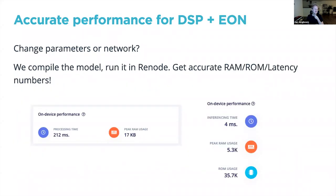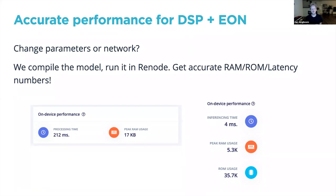We also provide accurate performance numbers for all our code — both signal processing and neural networks compiled with EON. If you change a parameter like the FFT length for audio, or the number of layers in your neural network, we compile the model, run it in Renode (an ARM microcontroller emulator), and get accurate RAM, ROM, and latency numbers. So while you're designing your ML model, we can tell you exactly whether it's going to fit within your latency, RAM, and flash constraints.